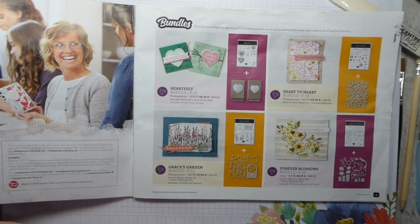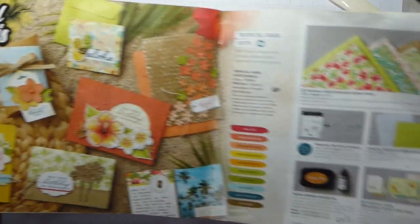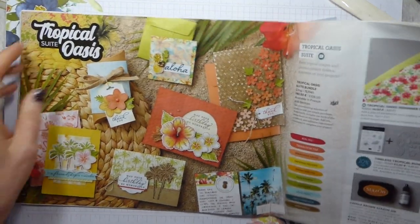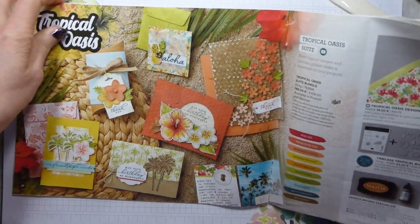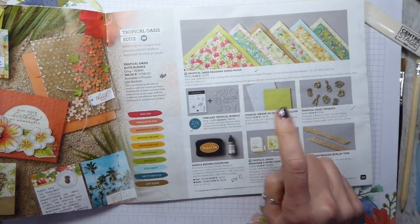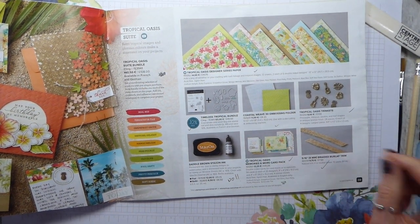The Tropical Oasis is on page 38, so let's find page 38 and have a look at all this wonderful summery feel. It's really miserable here in South Oxfordshire, so this is where I want to be. Look at all these lovely colours! Designer Series Paper. The 3D embossing folder is the Coastal Weave, and it is gorgeous.